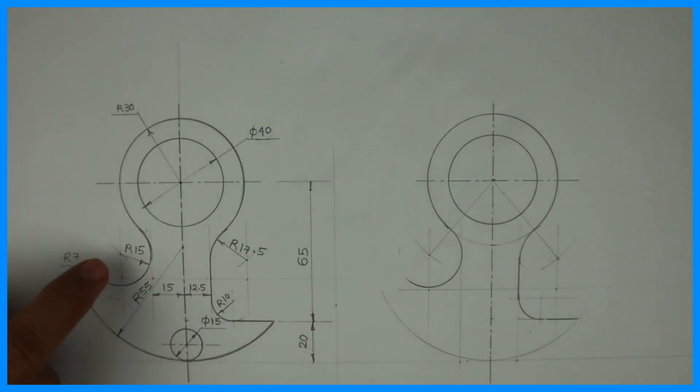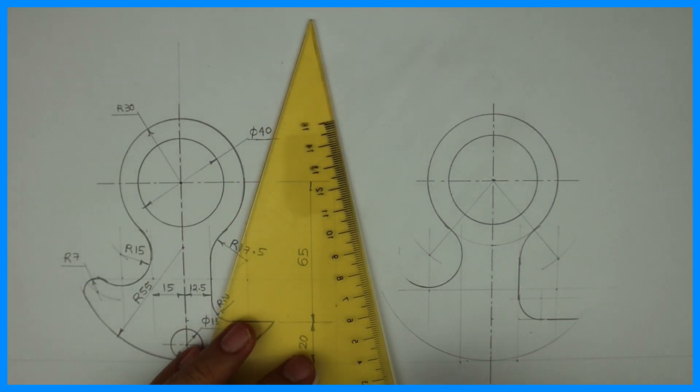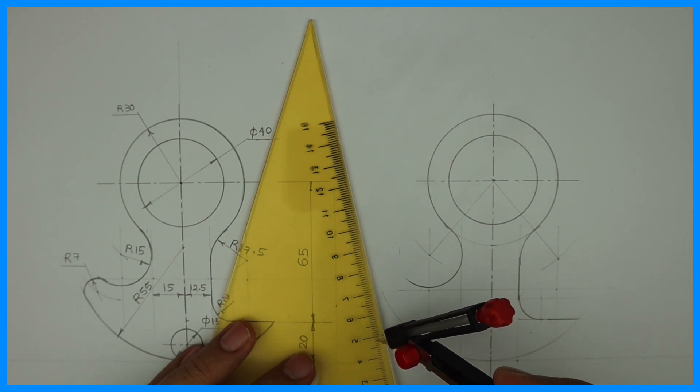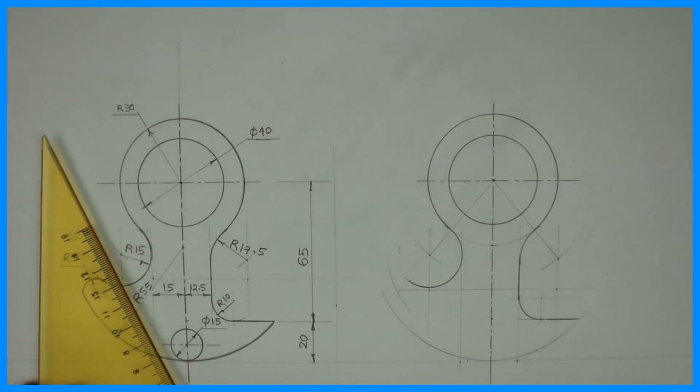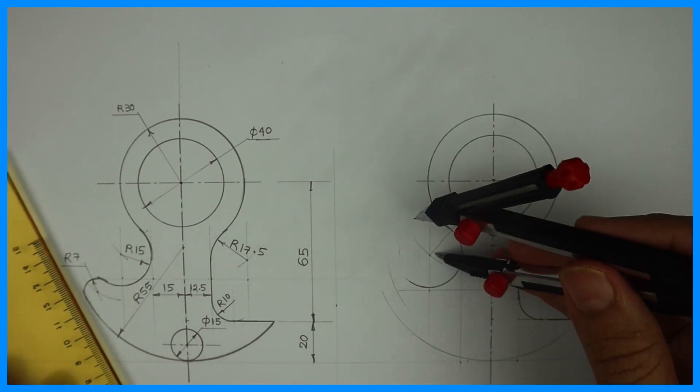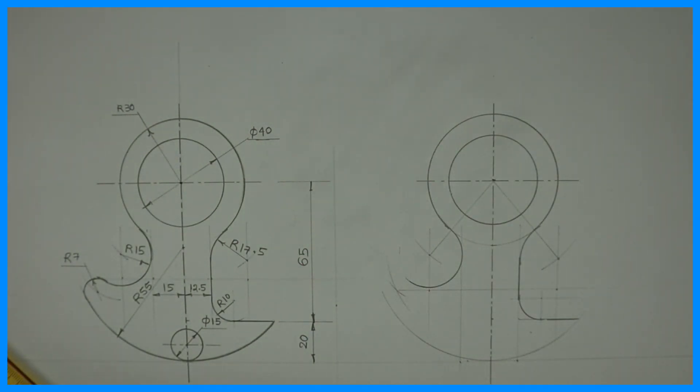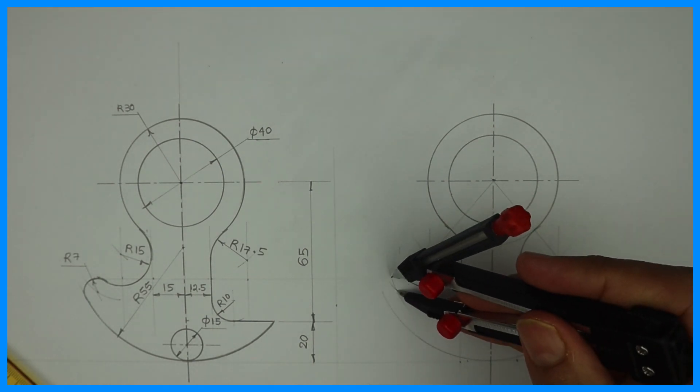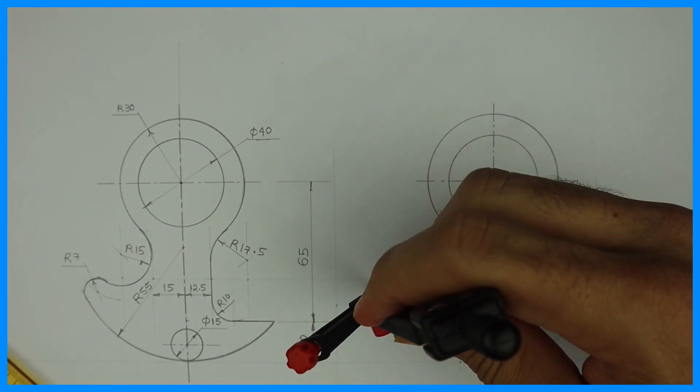Now this radius 7. So 15 plus 7 external and 55 minus 7 internal. 55 minus 7 and from here 15 plus 7 because it is external. 55 minus 7, so from here we will cut 55 minus 7, so that would be 48. And from here 15 plus 7, that is 22. So from here we will cut 22. Wherever they intersect, from that point we will draw radius 7.